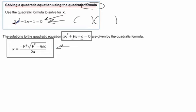So in this case, we've got a is 5. Notice this is a plus b, so that means b is negative 5. And a plus c here means that c is negative 1.